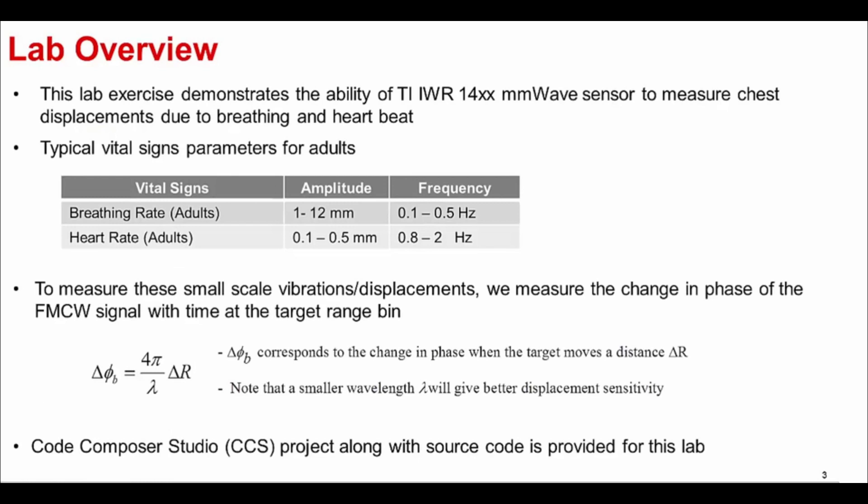This lab exercise demonstrates the ability of TI millimeter wave sensors to measure chest displacements due to breathing and heartbeat. Typically for a human adult, the chest displacement due to breathing is a few millimeters, while for the heartbeats it is in the order of several hundred micrometers. To measure these small displacements, we use the phase of the FMCW signal at the target range bin and track this phase over time.